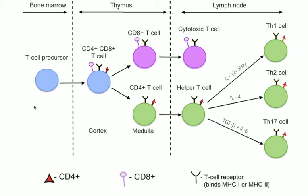T-cell is a type of lymphocyte which is originated from hematopoietic stem cells, which are found in the bone marrow and develop into several distinct types of T-cells once they have migrated to the thymus gland.